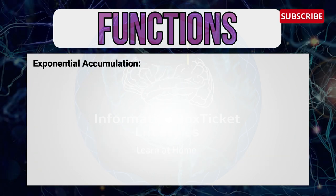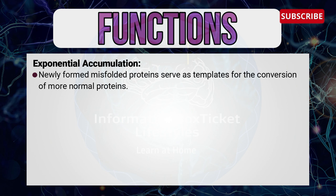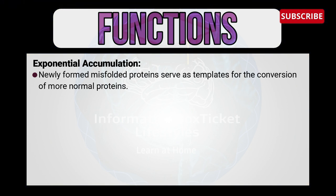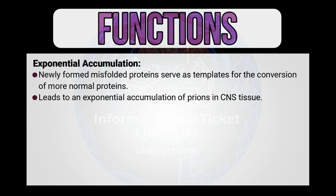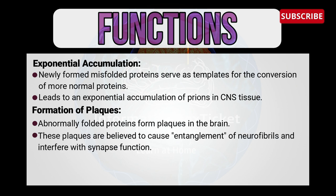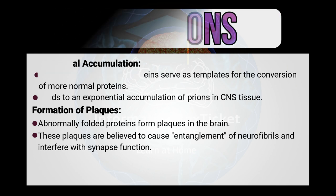Newly formed misfolded proteins serve as templates for the conversion of more normal proteins, leading to an exponential accumulation of prions in central nervous system tissue. Abnormally folded proteins also form plaques in the brain. These plaques are believed to cause entanglement of neurofibrils and interfere with synaptic function.